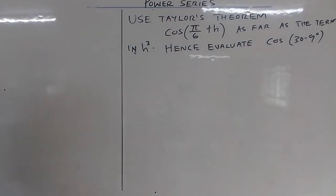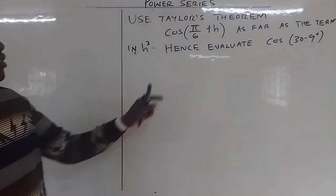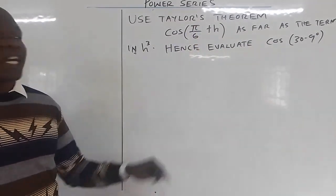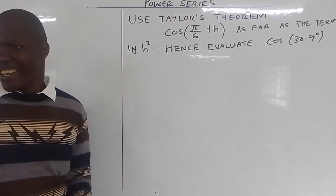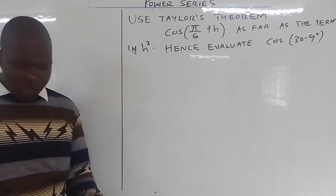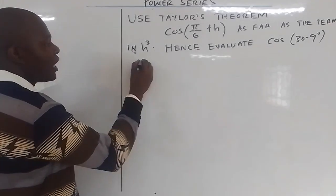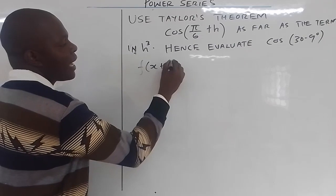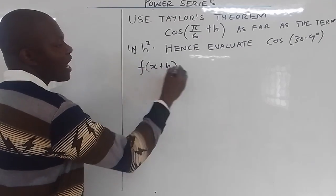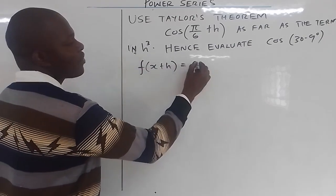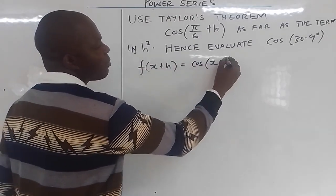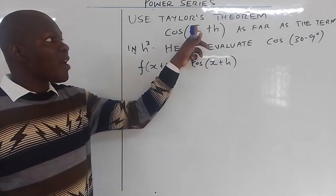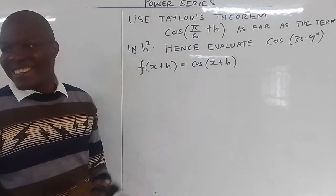For you to use Taylor's theorem, you can see that if π/6 is x, it's like we are expanding cos(x + h). So this is a function x + h, and we will give the function f(x + h) to be equal to cos(x + h), meaning our x is π/6.